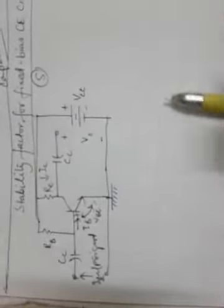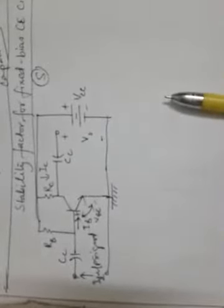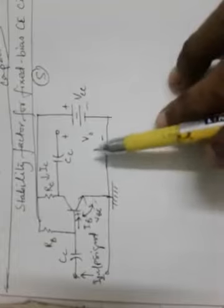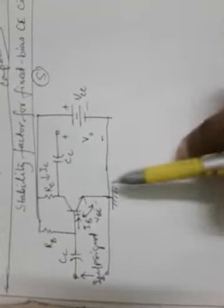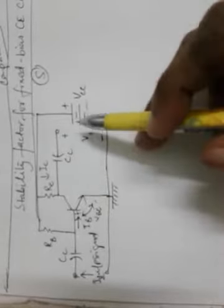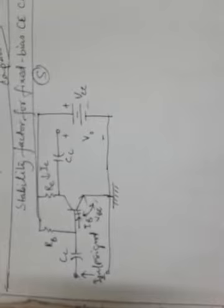In this circuit the quiescent base and collector currents are provided by a single battery of voltage VCC. This biases the emitter junction in the forward direction and collector junction in the reverse direction. The voltage VBE is small compared to VCC, so it will be ignored in calculations. We can calculate the quiescent base current approximately as IB equal to VCC minus VBE divided by RB, or approximately IB equal to VCC by RB.